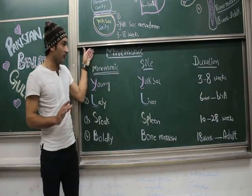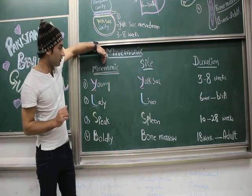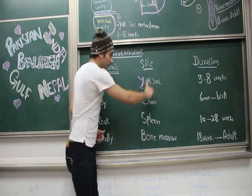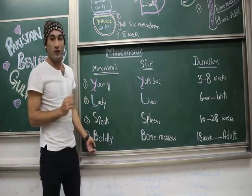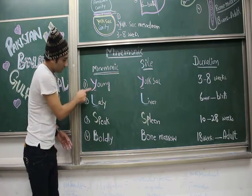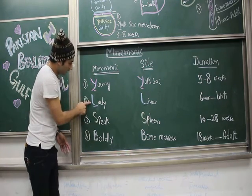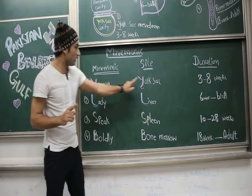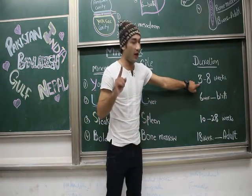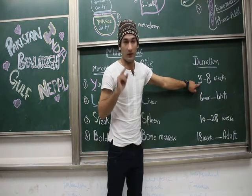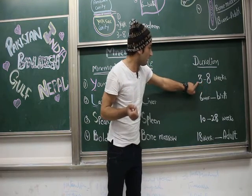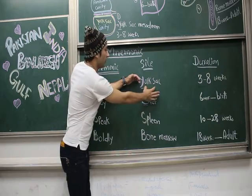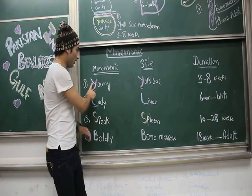Now for the mnemonics — just remember: Young Lady Speak Boldly. From 'Y' you remember Yolk Sac, and the duration is three to eight weeks. Just remember the embryonic period is from three to eight weeks — that is how you recall the duration for yolk sac erythropoiesis.